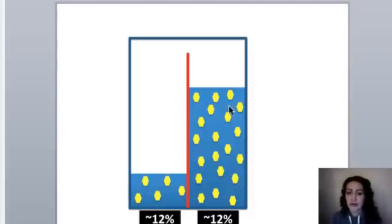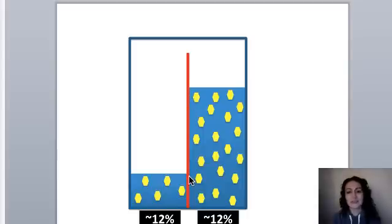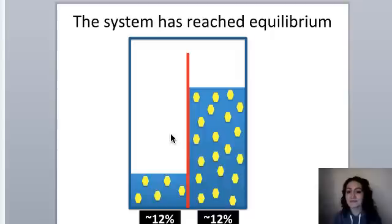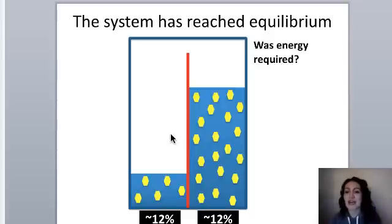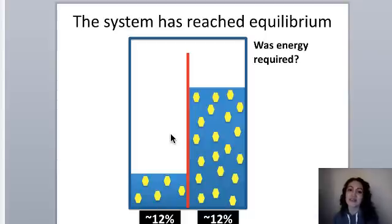The osmotic pressure on the concentrated side is strong enough to hold water to that height and prevent water molecules from flowing back out — even though the membrane is porous. It's because osmotic pressure is strong enough to prevent water from moving out. No energy was required for this process — you could set up this system, walk away, and it would happen naturally without adding any energy.